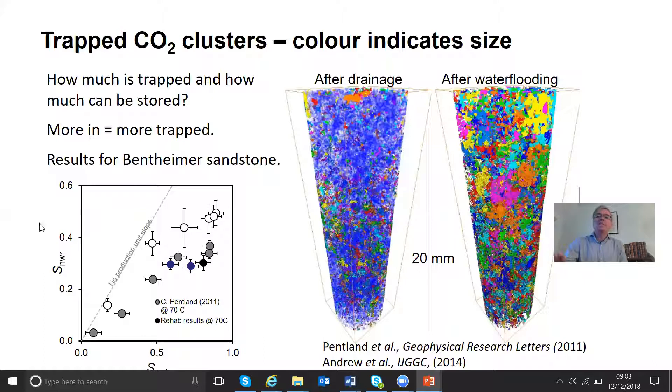So how much is trapped and how much can be stored? Well, what we have here, this graph here, is how much is trapped in the residual saturation against the initial saturation. And we have two curves. One is just oil and water. One is carbon dioxide. And what you see is the more CO2 put into the rock, the more you're going to trap. So more CO2, the CO2 occupies more of the pore space, so there are more pores in which it can be trapped when water goes in. That seems to make sense. And this is the behavior that we see for Bentheimer sandstone.